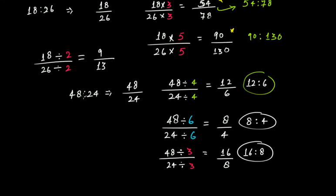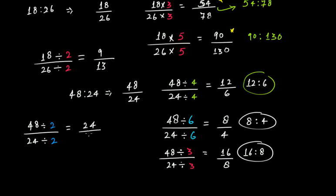If we divide 48 and 24 by 3, we get 16:8 — so 16 ratio 8 is another equivalent ratio. And if we divide 48 and 24 by 2, we get 24:12. So 24 ratio 12 is yet another equivalent ratio of this particular ratio.